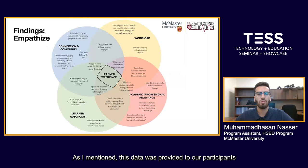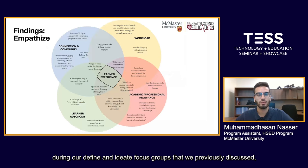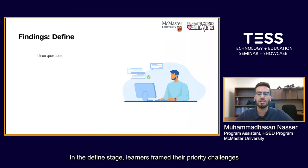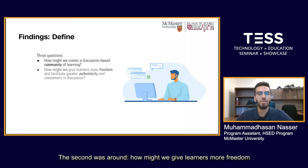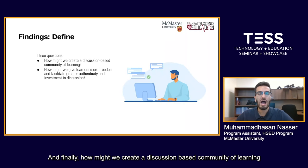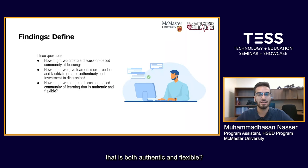As mentioned, these data were provided to our participants during our Define and Ideate focus groups to help inform their brainstorming process. In the Define stage, learners framed their priority challenges as three 'how might we' questions: how might we create a discussion-based community of learning; how might we give learners more freedom and facilitate greater authenticity and investment in discussion; and how might we create a discussion-based community of learning that is both authentic and flexible.